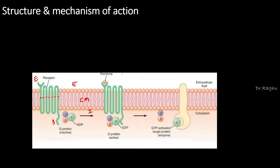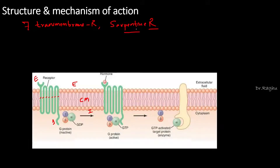That's why sometimes this receptor is also called as a seven transmembrane receptor. Because it appears like a snake which is traversing the cell membrane, and the intracellular portion of this receptor is attached to a protein called G-protein — or it is coupled to that protein which is called G-protein. That's why this receptor is called as G-protein coupled receptor.